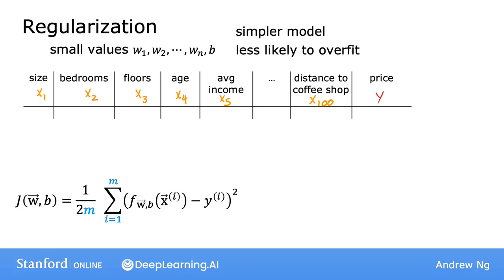On the last slide, we penalized only w3 and w4. But more generally, if you have a lot of features — say 100 features — you may not know which are the most important ones to penalize. So the way regularization is typically implemented is to penalize all of the wj parameters, which usually results in fitting a smoother, simpler, less wiggly function that's less prone to overfitting.